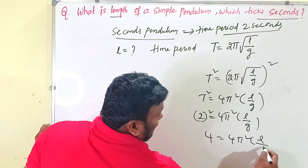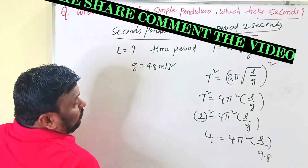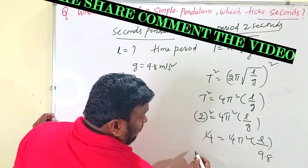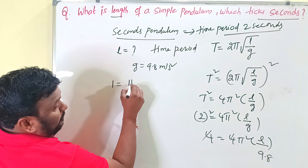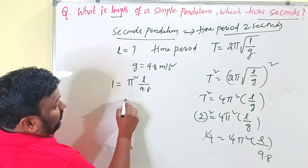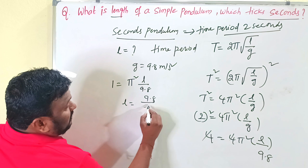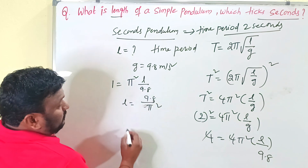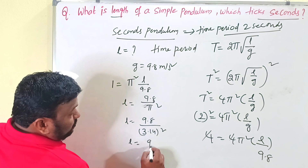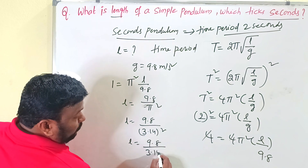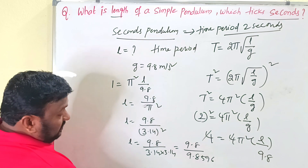The value of g is 9.8 m/s². The 4 on both sides cancels, leaving 1 = π² × (l/9.8). Solving for l: l = 9.8 / π². Substituting π = 3.14, we get l = 9.8 / (3.14 × 3.14) = 9.8 / 9.8596.